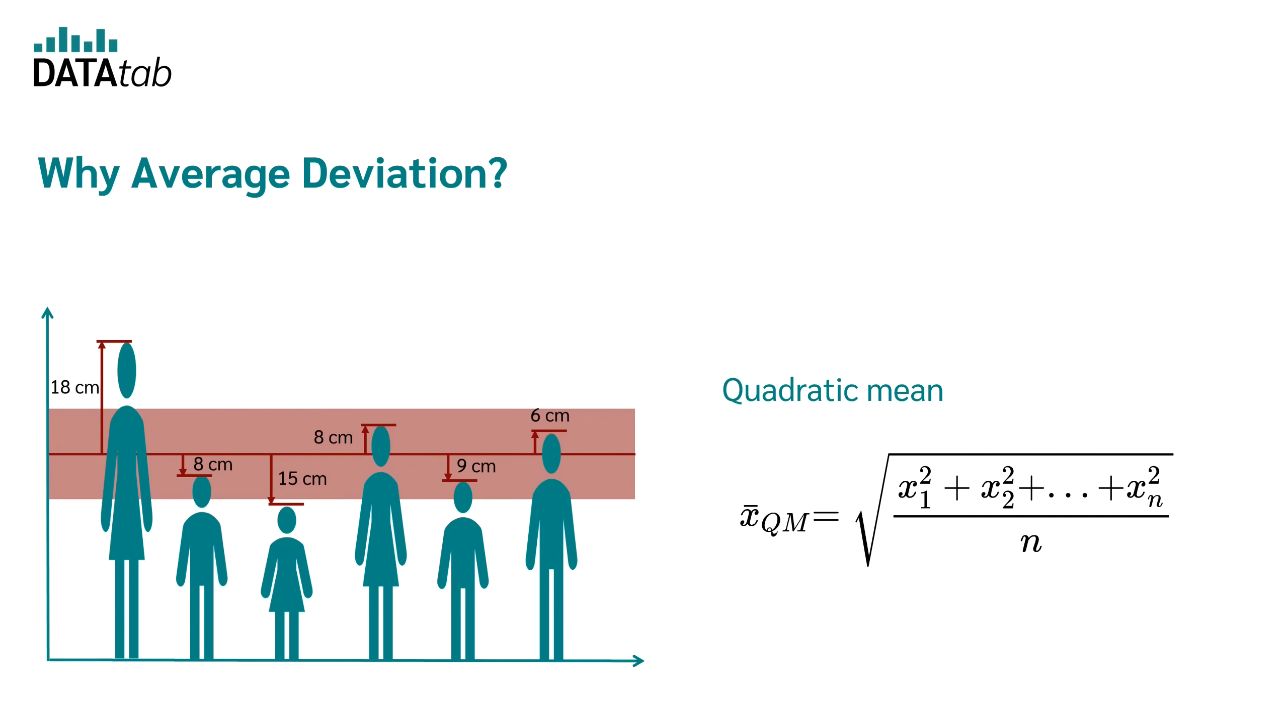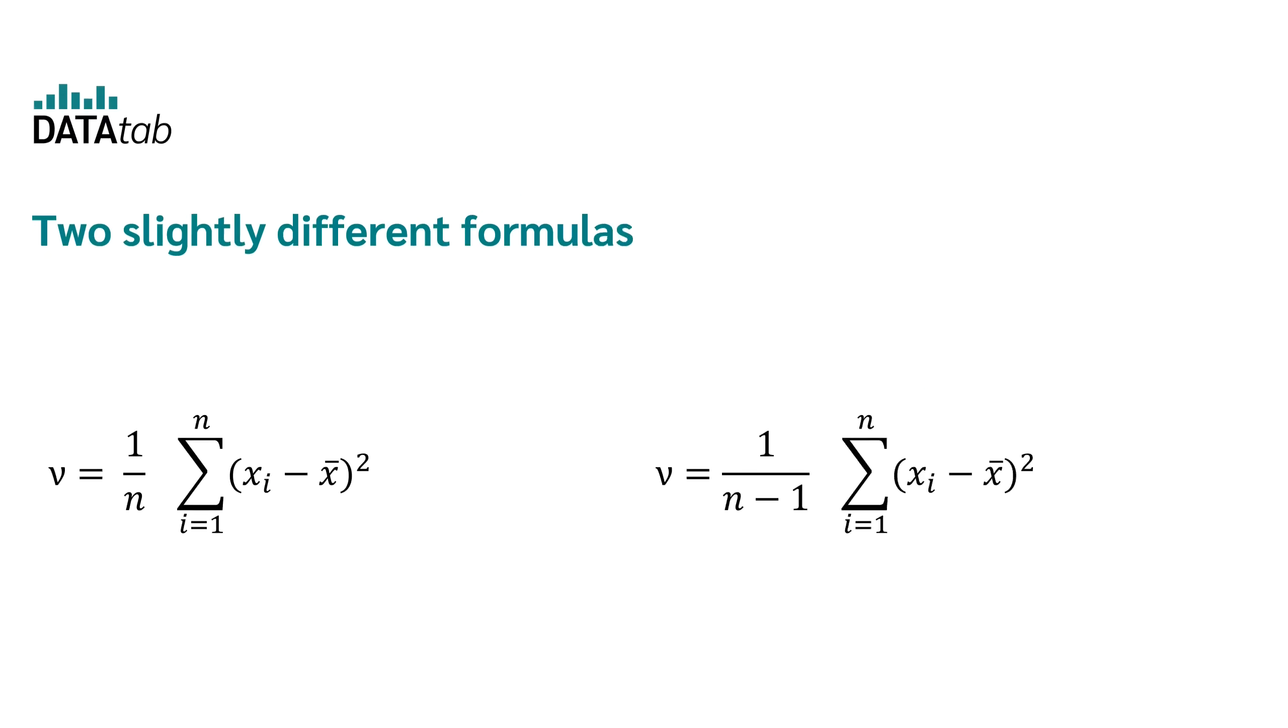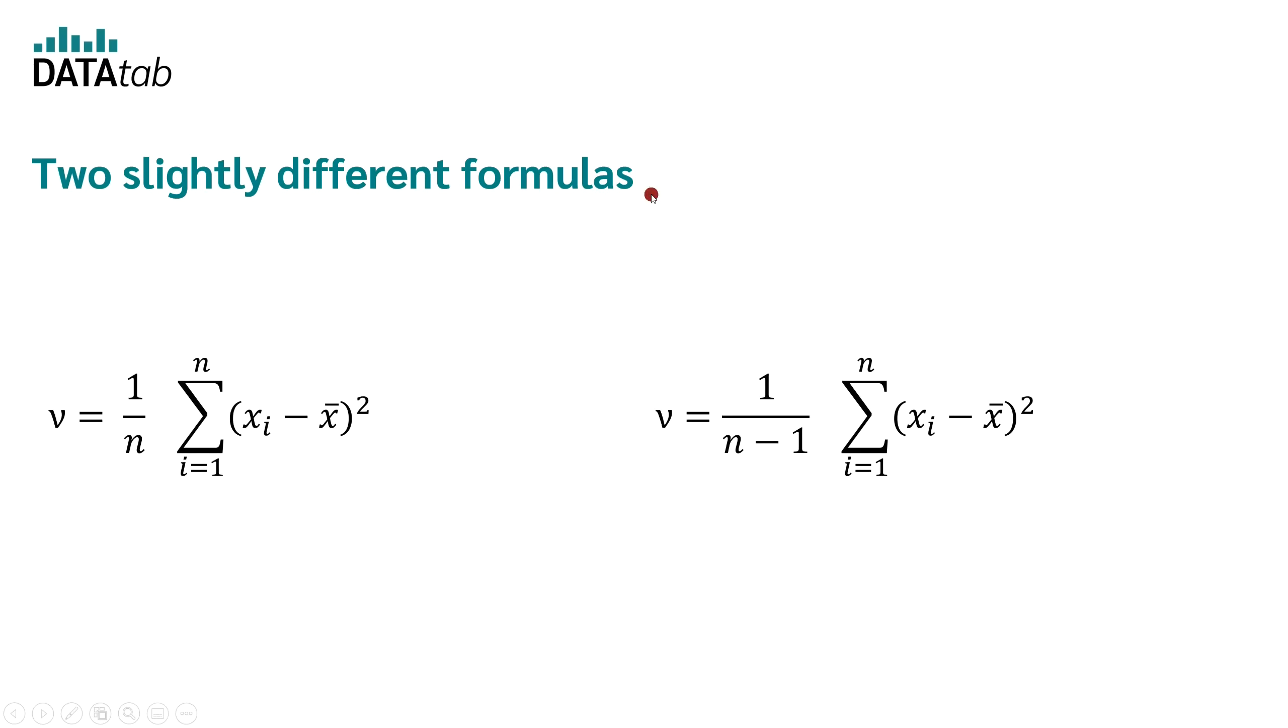So far so good. But now there is one more thing to consider, namely there are two slightly different formulas for the variance. The difference between the equations is that one is divided by n and one is divided by n-1. But why? Why are there two different formulas?